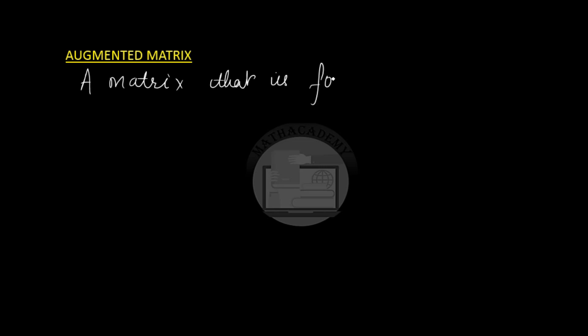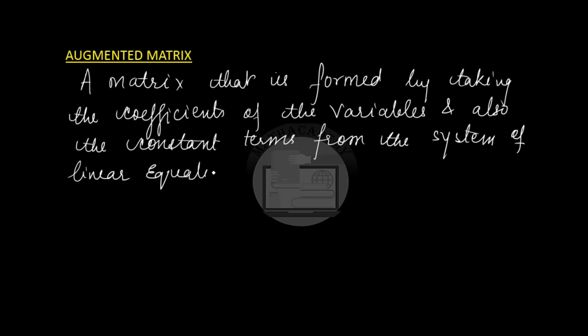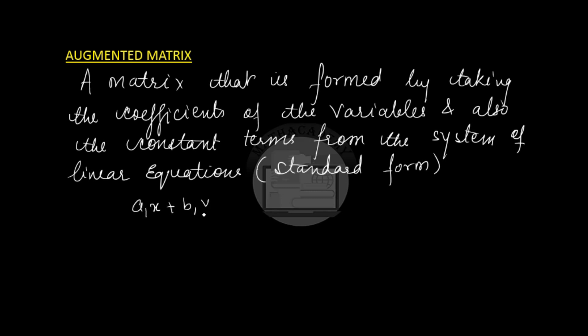What is an augmented matrix? An augmented matrix is a matrix formed by taking the coefficients and also the constant terms. One thing which has to be noted is that whenever we form the augmented matrix, the system of linear equations should always be in the standard form. It should be in the form where, for three variables: a1x + b1y + c1z = d1.